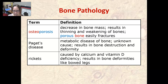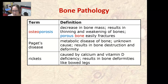Paget's disease is a metabolic disease of the bone of unknown cause. It results in bone destruction and deformity. Rickets is another bone disease. It is caused by calcium and vitamin D deficiency, and it results in bone deformities like bowed legs in children, so this would happen as they grow.